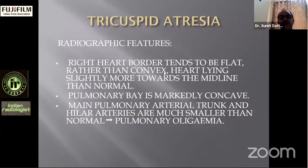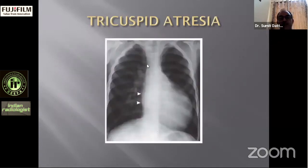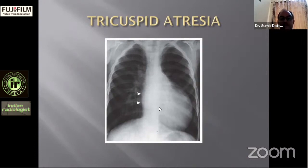In tricuspid atresia, the right heart border tends to be flat rather than convex, with the heart lying slightly more towards the midline than normal. The pulmonary bay is markedly concave; the main pulmonary trunk and hilar arteries are much smaller than normal, indicating pulmonary oligemia. On the chest X-ray, a flat right heart border is seen because the enlarged right atrium takes the place of the small right ventricle, pushing it medially, causing that flattening. There is cardiomegaly with oligemic lung fields — a classic appearance of tricuspid atresia.